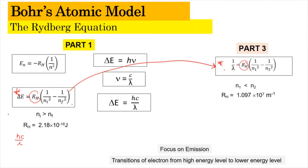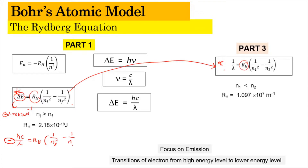Because of this emission process, delta E will usually give a negative value — for example, negative 1.55 kilojoules per mole. This negative value indicates that energy is being released due to emission, so the negative sign is significant. We place the negative value here, and then copy back RH, along with 1 over Ni squared minus 1 over Nf squared.